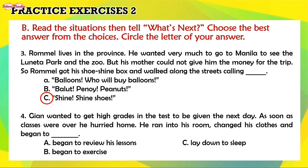4. John wanted to get high grades in the test to be given the next day. As soon as classes were over, he hurried home. He ran into his room, changed his clothes, and began to... A. Began to review his lessons. B. Began to exercise. C. Lay down to sleep. The correct answer is A. Began to review his lessons.